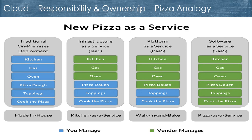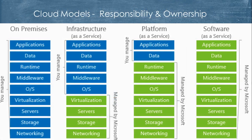In the last section, which is pizza as a service, you do nothing — you drive to the place, order your pizza from Giordano's or get it delivered to your desk, consume it, and pay the bill. You're not responsible for cooking, toppings, pizza dough, or oven. There are different ways, and we'll use this analogy to compare kitchen as a service, walk-in-and-bake, and pizza as a service with on-prem, infrastructure, platform, and software as a service.